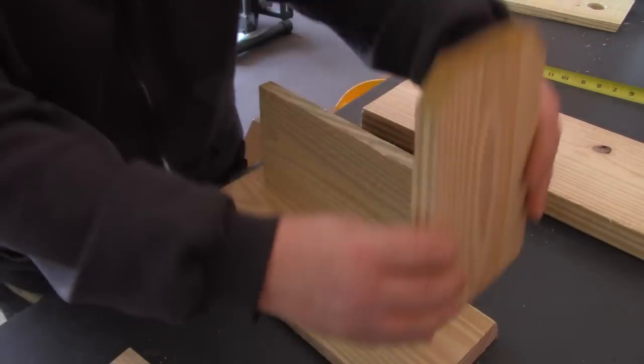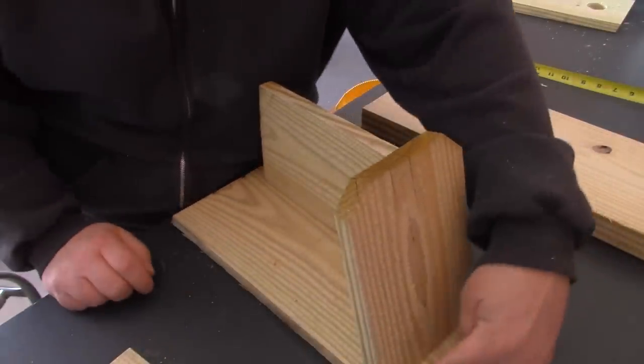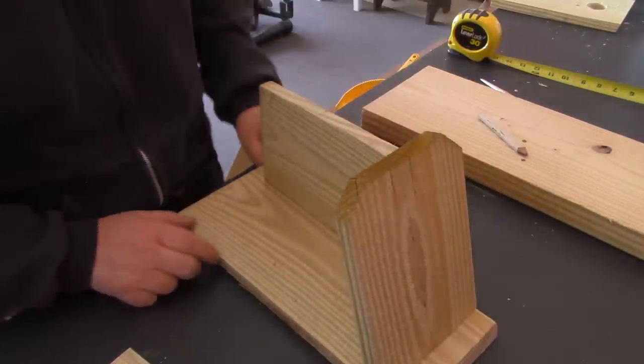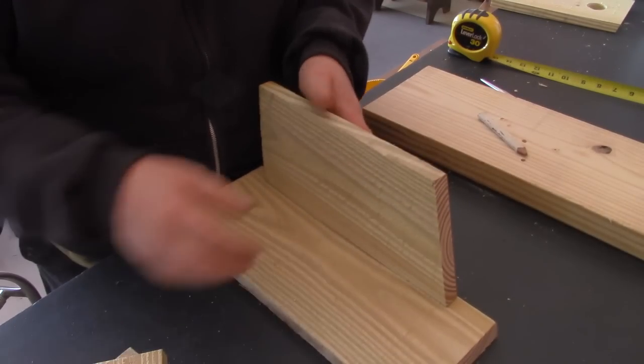Set up your sides. Mark your sides. Put your roof on. You want to leave about an inch on the top there and on the bottom. That's where you're going to drill to mount to a fence post or a wall.